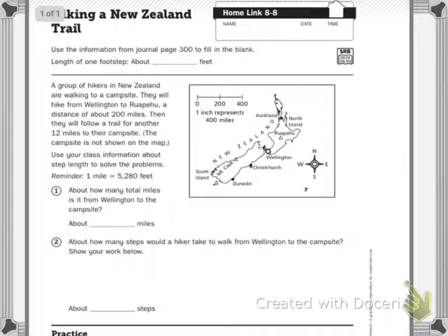Homelink 8-8: Hiking a New Zealand trail. Use the information from the journal page 300 to fill in the blank.